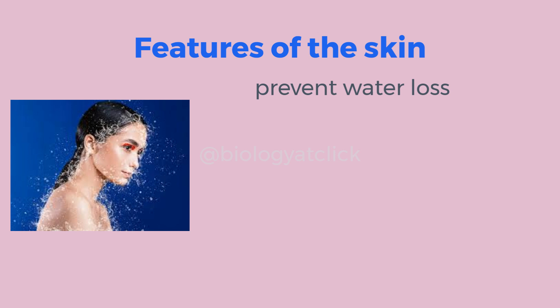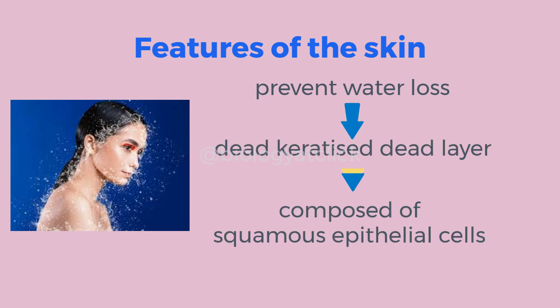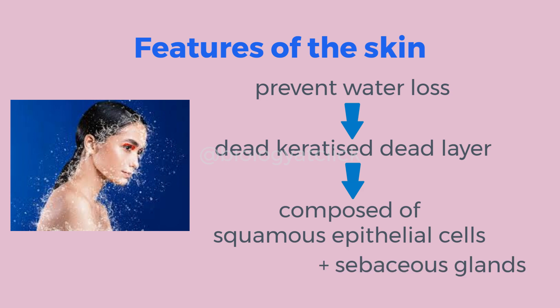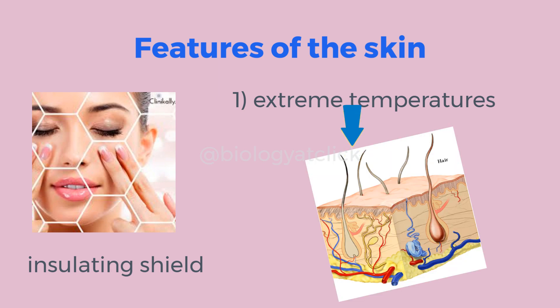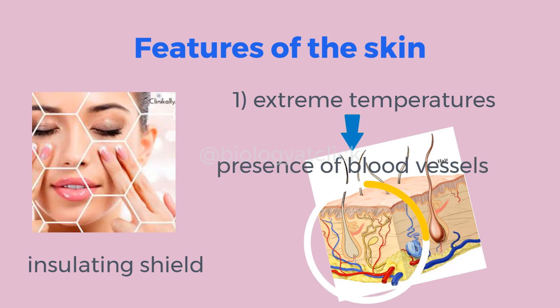The skin is waterproof owing to its outer dead keratinized layer composed of squamous epithelial cells. The presence of sebaceous glands also helps to prevent water loss. Skin acts as an insulating shield that protects the body against extreme temperatures, owing to its immense blood supply.